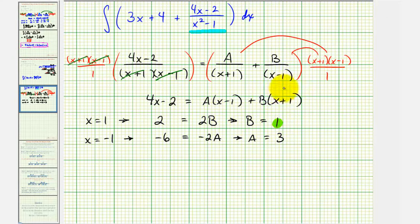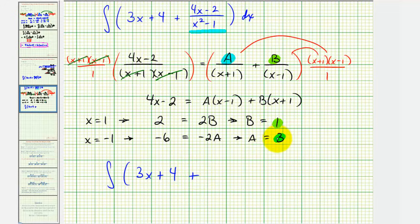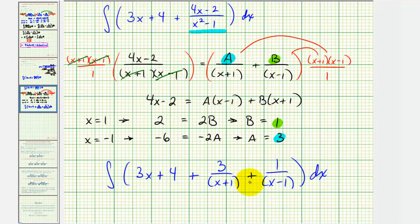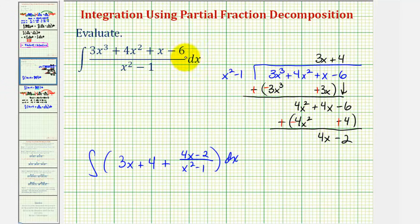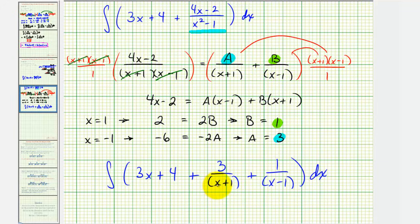Now, substituting A equals three and B equals one, we can rewrite this rational expression as the sum. We write the integral as the integral of three x plus four, plus — since A equals three — three divided by the quantity x plus one, plus — since B equals one — one divided by the quantity x minus one. The whole point of this process is that the original integral couldn't be integrated directly, so we performed long division and then partial fraction decomposition, giving us a sum of expressions we can now integrate.